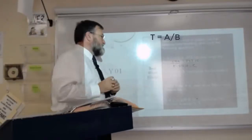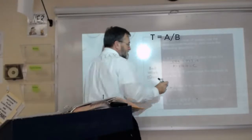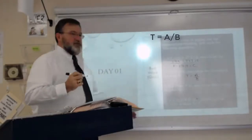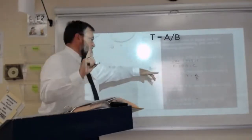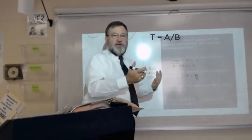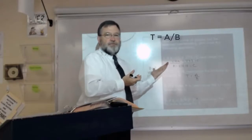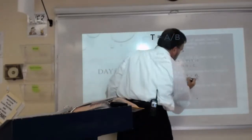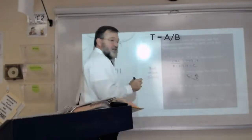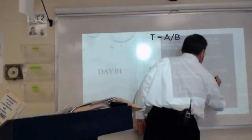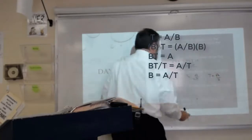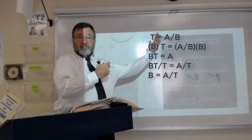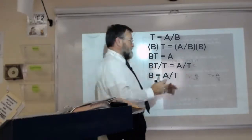The second one, T equals A divided by B. Rearrange this to solve for B. There's a shortcut method - you can always slide across the equal sign diagonally. The long way: I need to get B in the numerator. I'm going to multiply both sides by B.